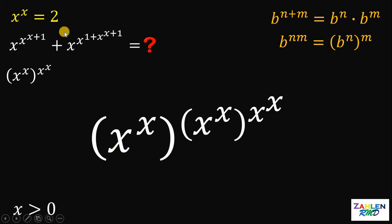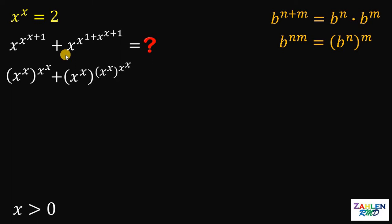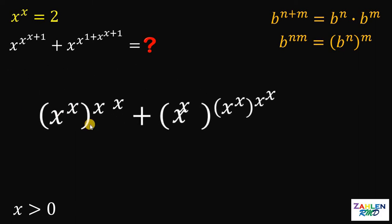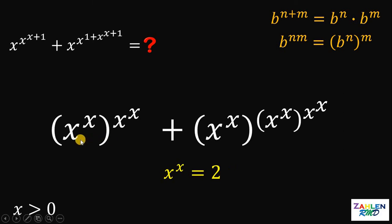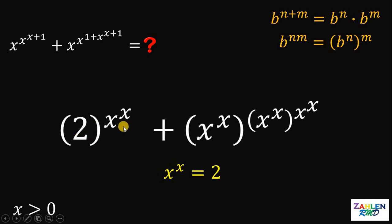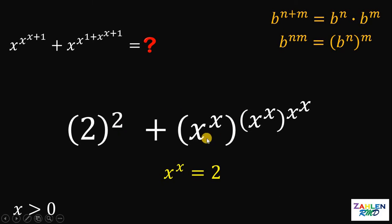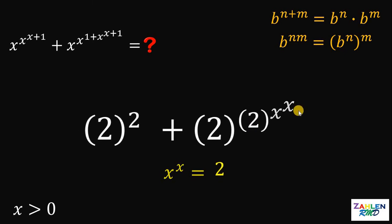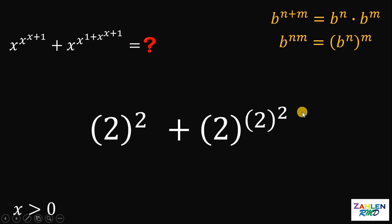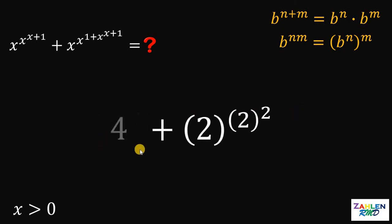Now x raised to x is just 2. At this point, we are ready to evaluate this expression. The original expression is equivalent to x raised to x raised to x, plus x raised to x raised to x raised to x raised to x. Take note that x raised to x is just 2. So this x raised to x is just 2, and we have 2 raised to 2. On the other side, we have 2 raised to 2 raised to the power of 2. Let's simplify — 2 squared is just 4.